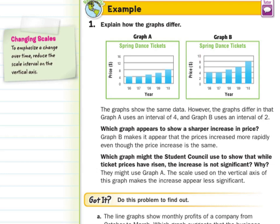Which graph appears to show a sharper increase in price? Well that would be graph B. If you look, it looks like it's going way up as opposed to graph A that's a little bit more steady.